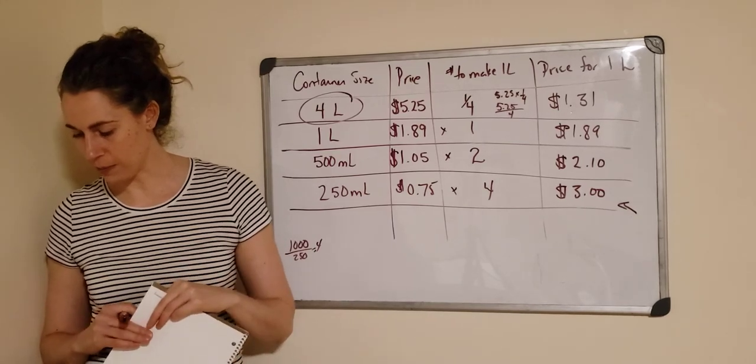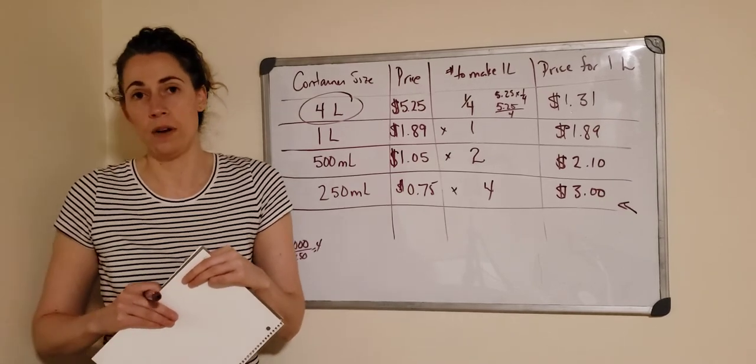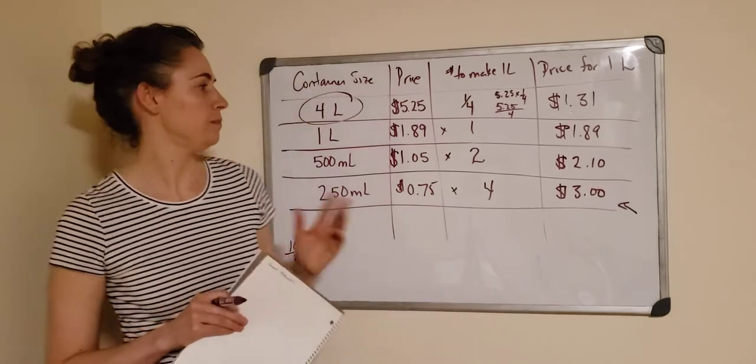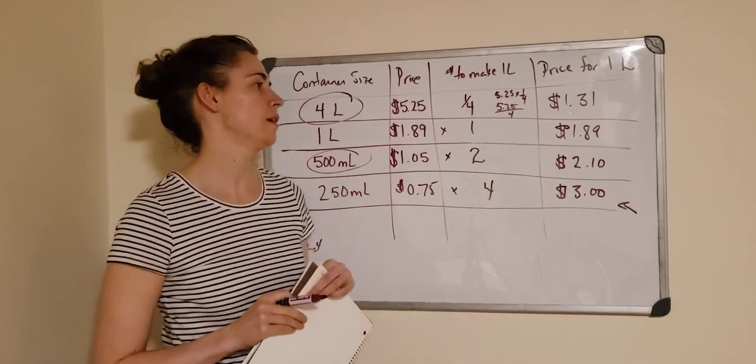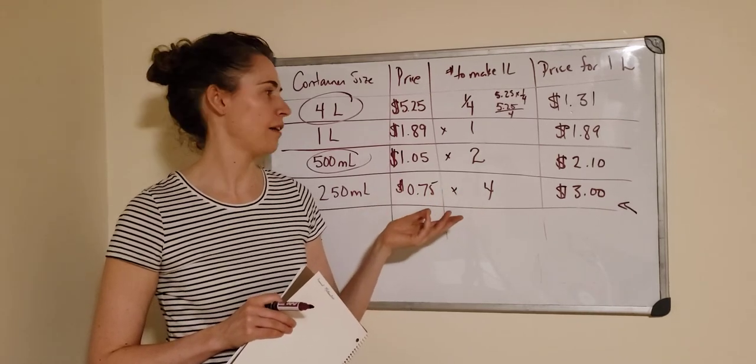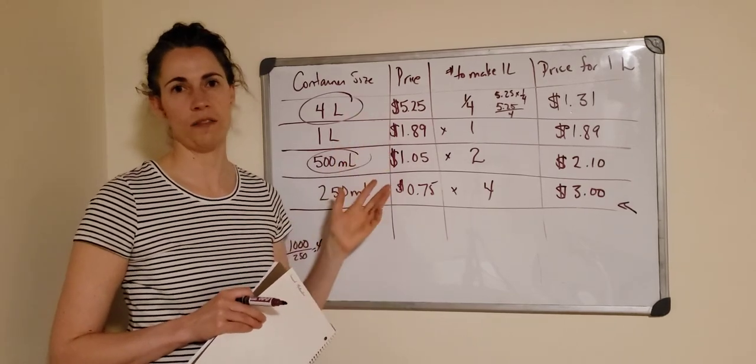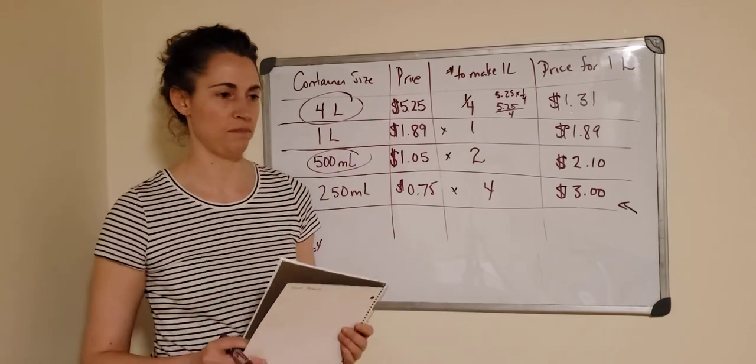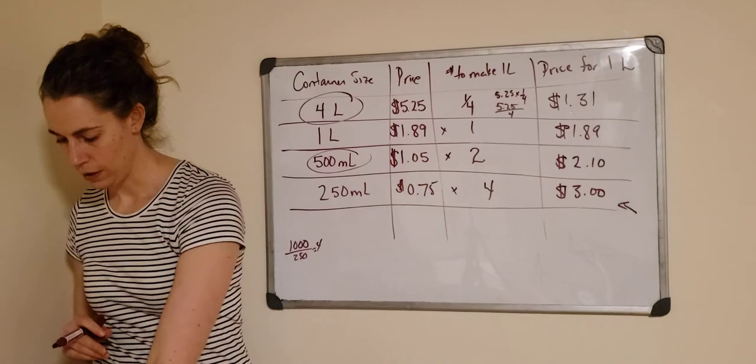Number six says the best buy might be of a size that cannot be used up by the expiry date. How would this affect what you consider to be the best buy? Let's say you drink a little bit of milk but not a lot, and you'll probably go through maybe 500 milliliters in the next week. If the expiry date is a week for all of them, you're better off buying the smaller one because you'll just end up throwing the extra milk away. Pay attention to those kinds of things as well.